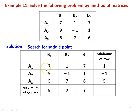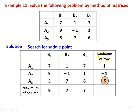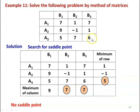Now we search for the saddle point. For every row, find the minimum: row A1 (7, 1, 7) → minimum = 1; row A2 (9, −1, 1) → minimum = −1; row A3 (5, 7, 6) → minimum = 5. For every column, find the maximum: column B1 (7, 9, 5) → maximum = 9; column B2 (1, −1, 7) → maximum = 7; column B3 (7, 1, 6) → maximum = 7. The maximin value is 5 and the minimax value is 7. These two values are not equal, so there is no saddle point. The matrix cannot be reduced by the dominance rule, so we use the matrix method.